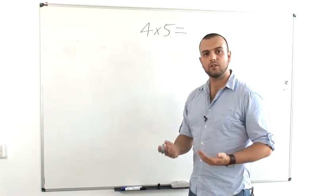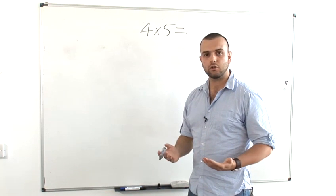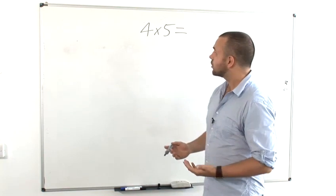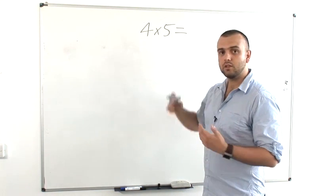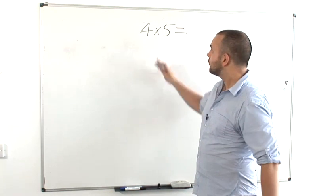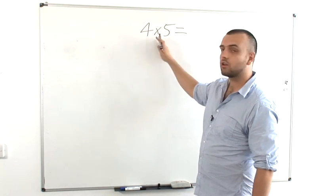When teaching multiplication, it's always a good idea to tie it into the idea of addition, which the child should already be familiar with. Start off by saying that the times symbol simply means this many lots of. So four times five means four lots of five.